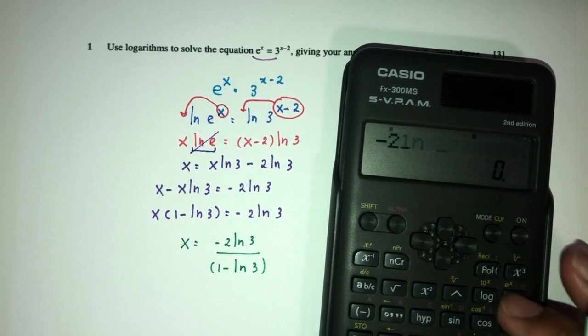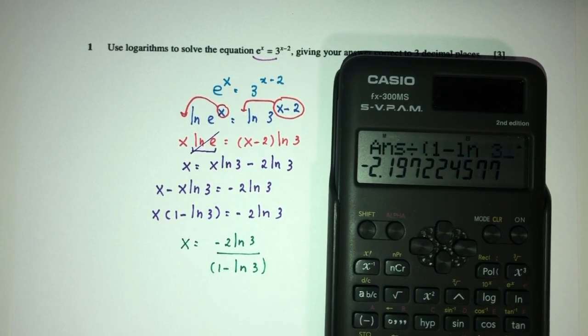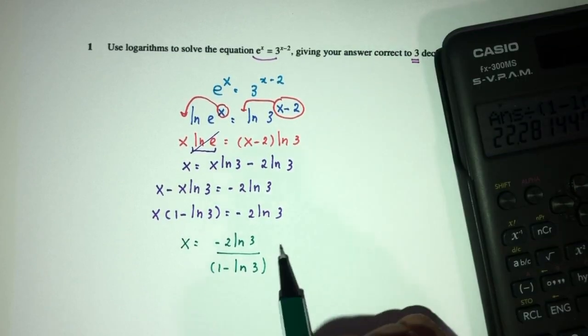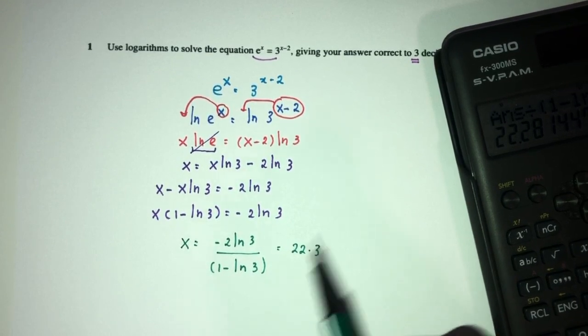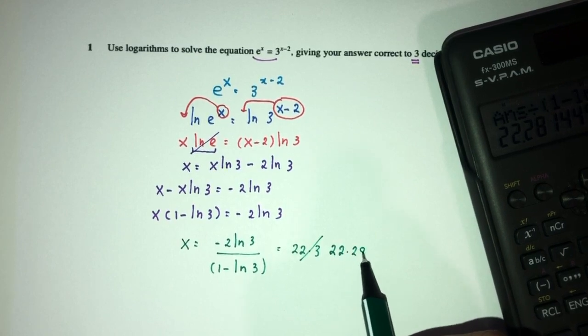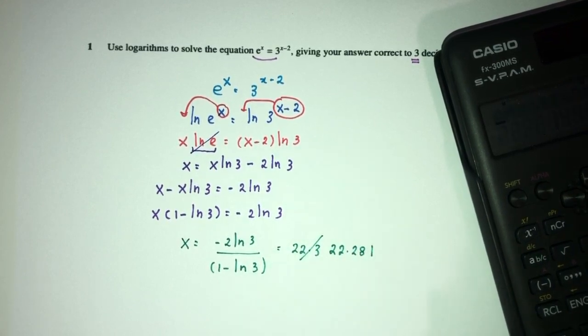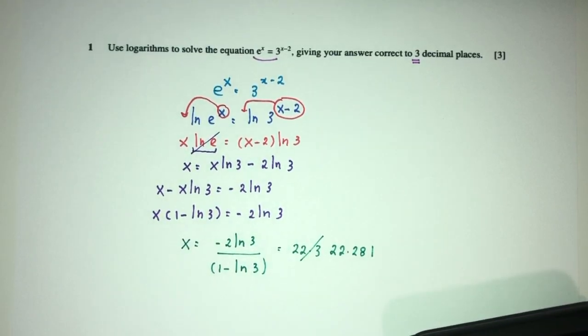That will be -2 ln(3) divided by (1 - ln(3)). That will be 22.281 to three decimal places. This is your answer for the value of x. That is your question number one.